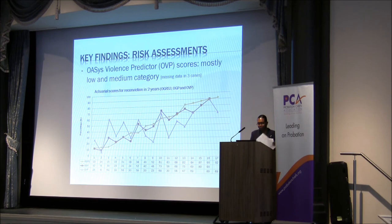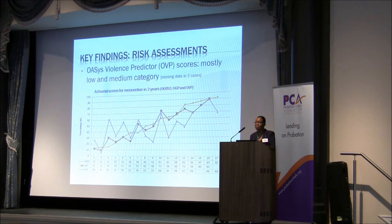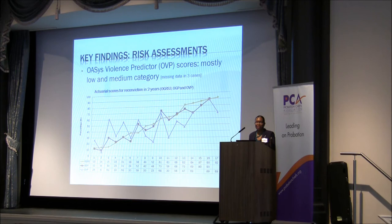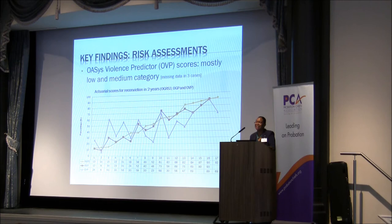Given the prevalence of violent index offences, you would expect the OASIS violence predictor — the OVP scores — to be high. But in fact only four cases had a high OVP score category, meaning a high likelihood of reconviction for violence, and only one had very high. The majority of cases had low and medium categorisations for the OVP. The question is whether this demonstrates that practitioners were making fluid assessments reflecting the dynamic nature of risk. However, OVP scores are supposed to reflect dynamic factors assessed within OASIS, so those dynamic issues should have had an impact on the OVP score.